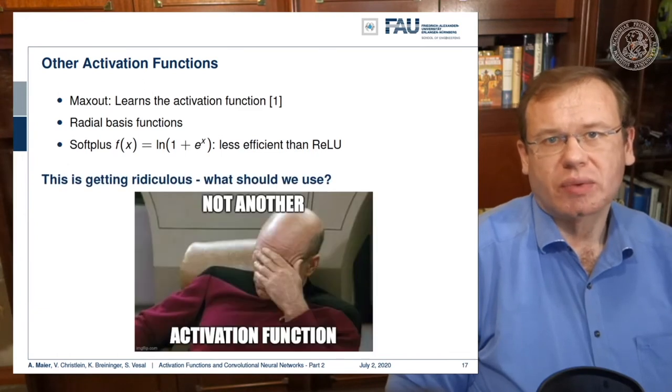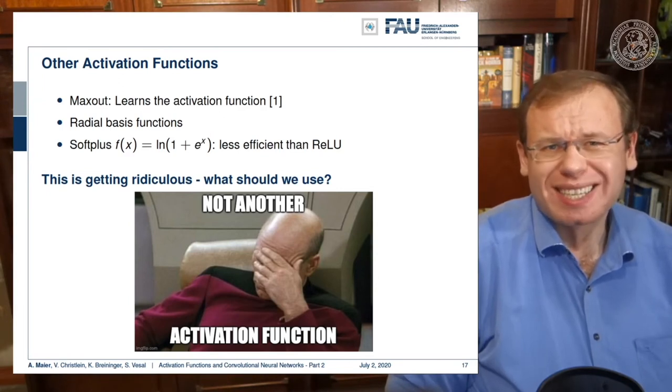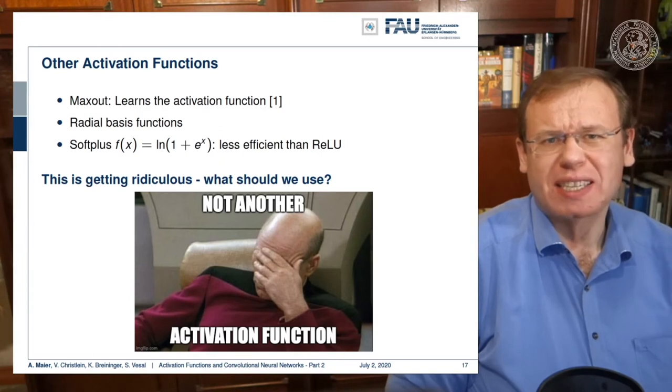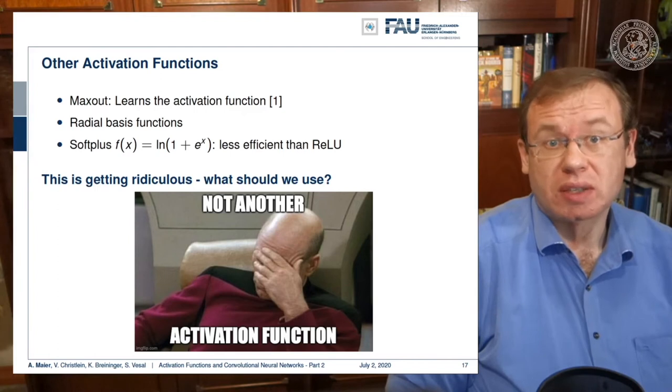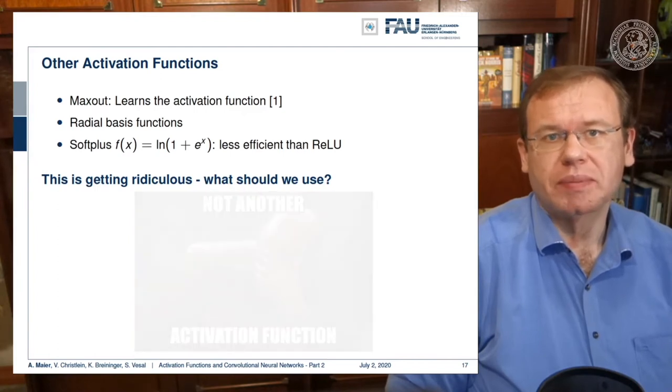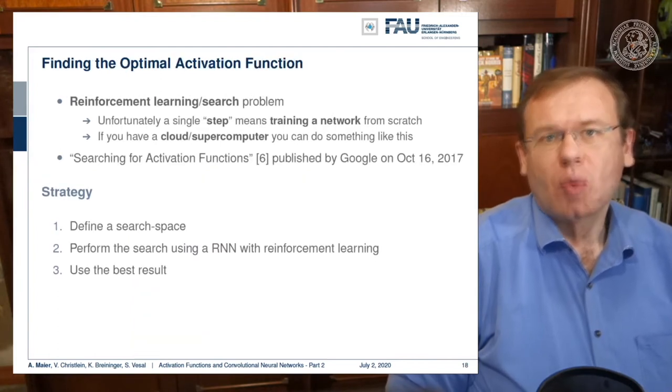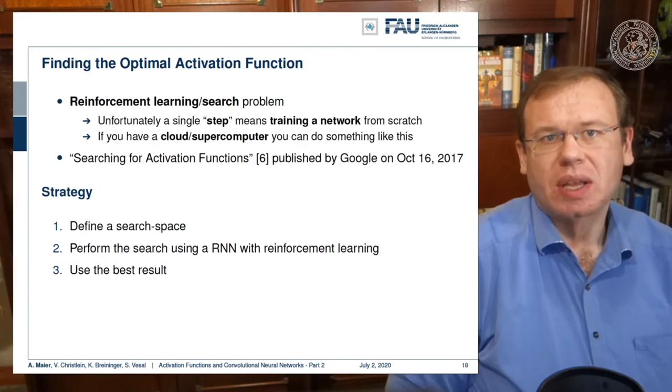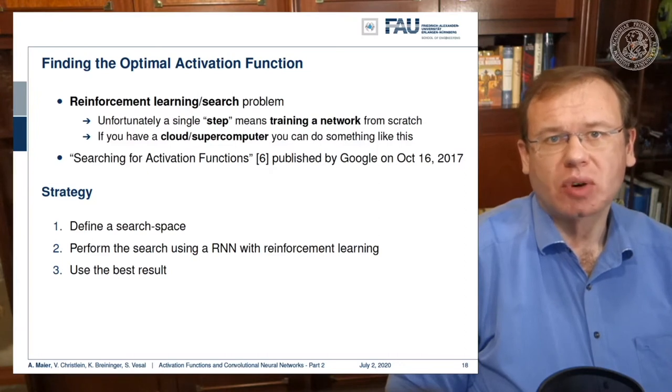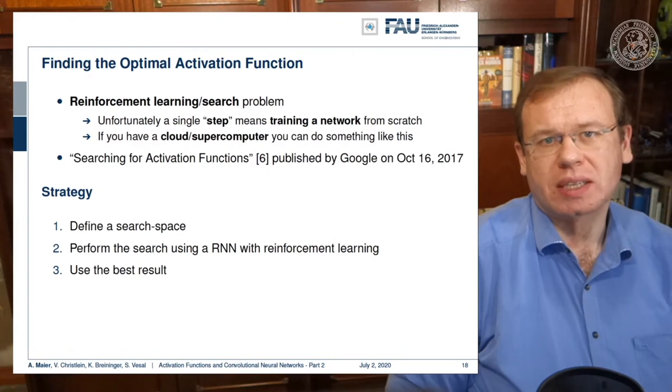This is actually getting ridiculous, isn't it? So what should we use now? People even went this far that they were trying to find the optimal activation function. They used reinforcement learning search in order to find them. We'll talk about reinforcement learning in a later lecture. We'll just discuss the results here. One problem in this reinforcement learning type of setup is that it's computationally very expensive.